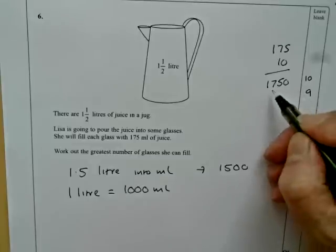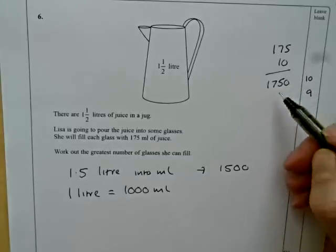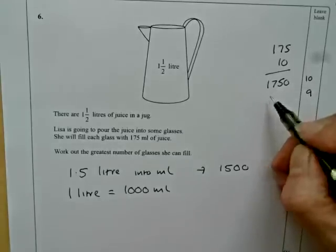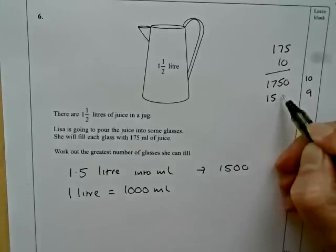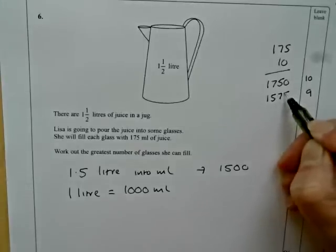That means nine, if I take one-seven-five off that. Now, a way of doing that is to take two-hundred off, which would give me one-five-five-oh, and put twenty-five back on, which is one-five-seven-five.